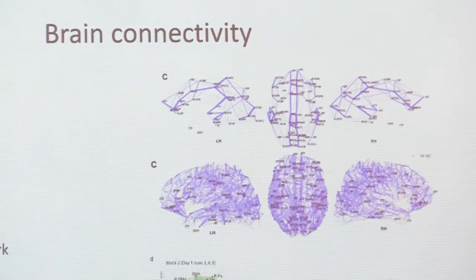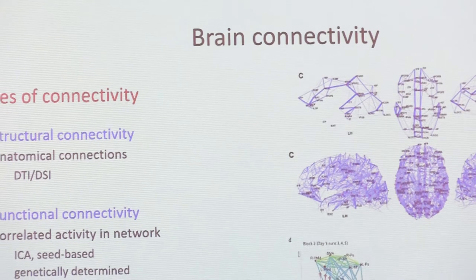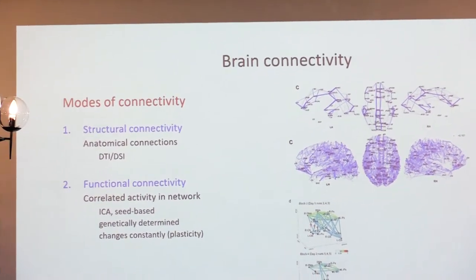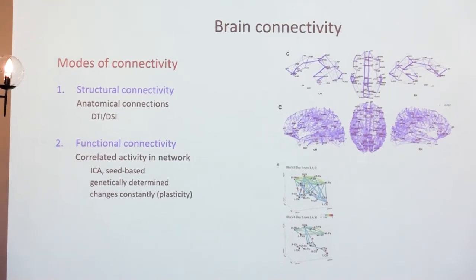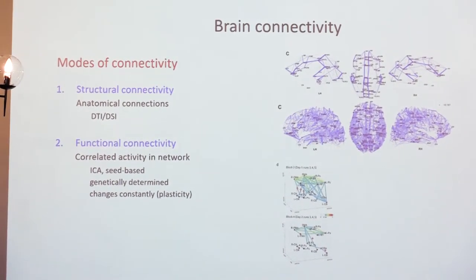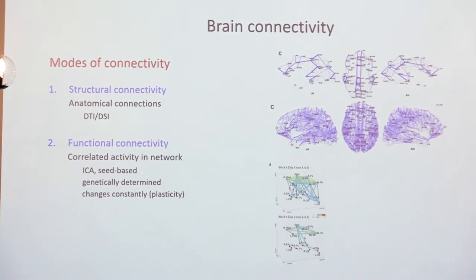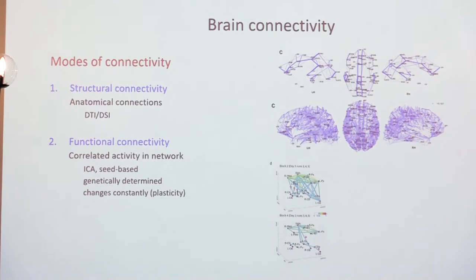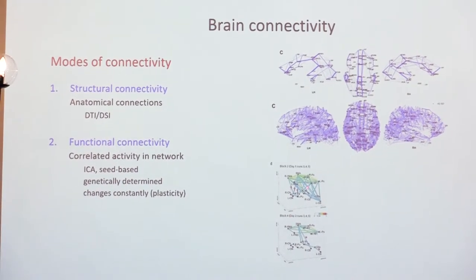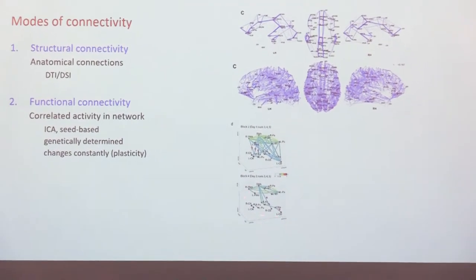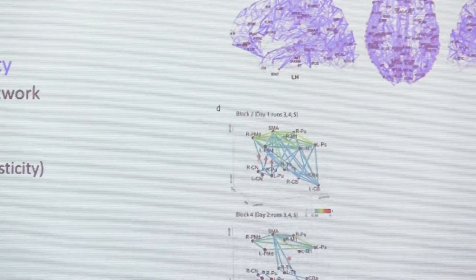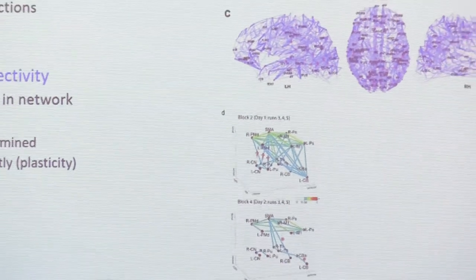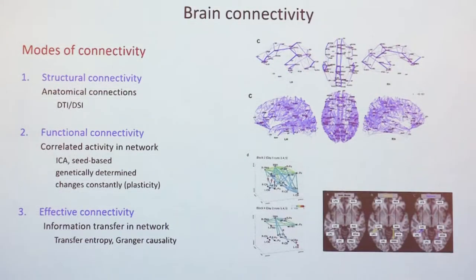You can also look at functional connectivity, which looks at correlated activity in different parts of the brain. If different parts of the brain are correlated, it doesn't mean they have to be synchronous — one can be active a little bit before the other, but in a systematic way — then you talk about functional connectivity. This is genetically determined and changes constantly. For example, if you perform a task for the first time you use a lot of connections, but if you repeat it multiple times, you become more efficient and use fewer connections. Then you also have effective connectivity, which is basically directional functional connectivity — it describes from where to where the information in your brain flows.